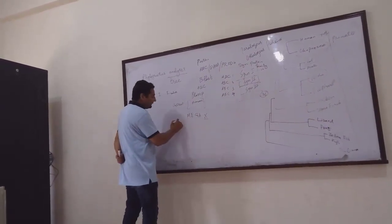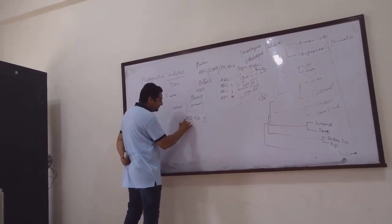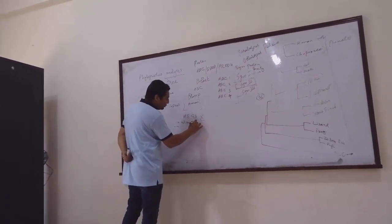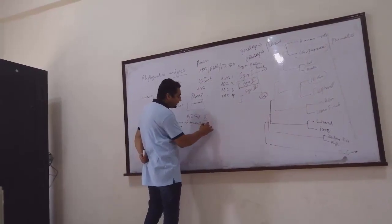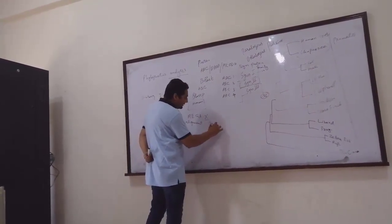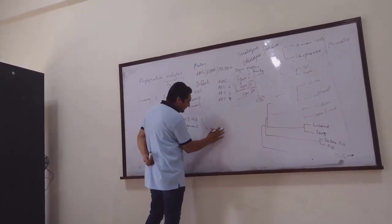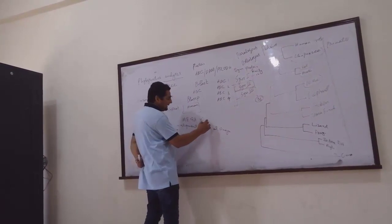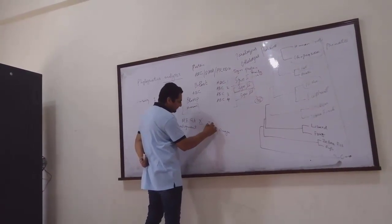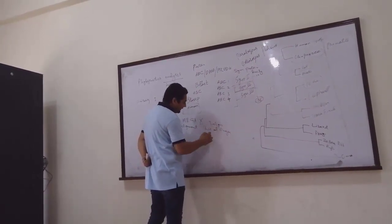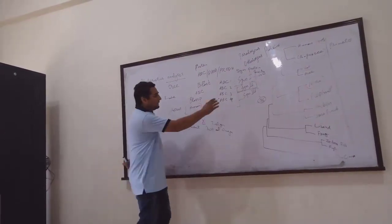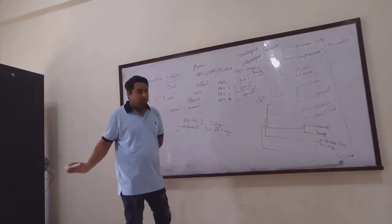Then you have to jump to MegaX — now it is MegaX version 10. This software you have to use for generating the phylogenetic tree. The first step is alignment. MegaX has two software embedded inside: ClustalW and also MUSCLE. So you just use ClustalW for aligning all the sequences — all 36 sequences — and you just align them.